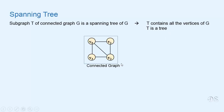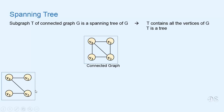For example, suppose we have this connected graph. This is a spanning tree of this graph because it contains all the vertices of this graph and it is a tree. It is a tree because it is connected and it has no cycles. So this is a spanning tree of this graph.